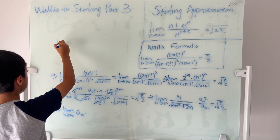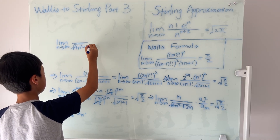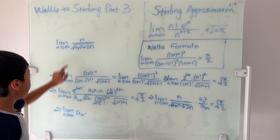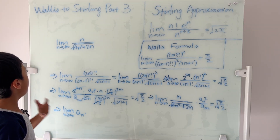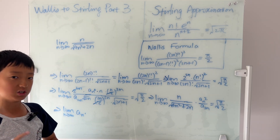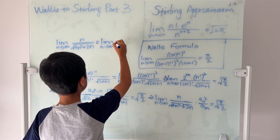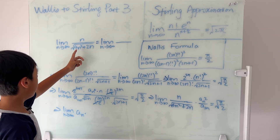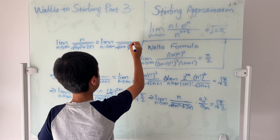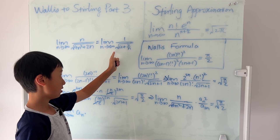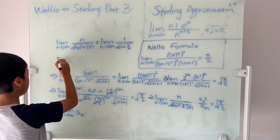We solve the limit as n goes to infinity of the square root of (4n² + 2n) over n. Dividing by n means multiplying inside the square root by 1/n², giving the square root of (4 + 2/n) over 1. Plugging in n → ∞: 2/n → 0, so we get the square root of 4, which is 2, and 1 over 2 is 1/2. So this limit equals 1/2.